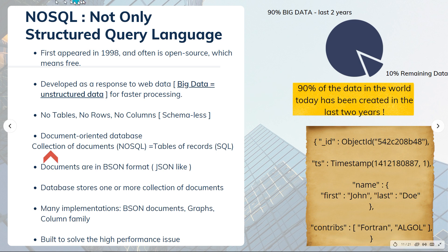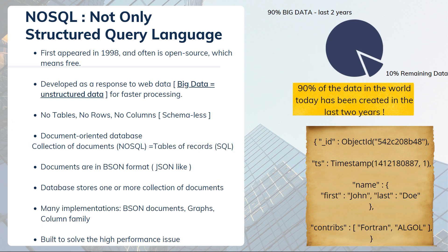NoSQL systems are based on the document model, also called document-oriented databases. The word 'collection' in the NoSQL world is equivalent to 'table' in SQL world. A collection of documents equals a table of records. There are many forms of NoSQL implementations: documents written in BSON with key-value pairs, graphs, and column-family databases. NoSQL was originally built to solve high-performance issues and succeeded in scaling with high performance without overclocking servers — but the cost is that queries are less flexible than in SQL.